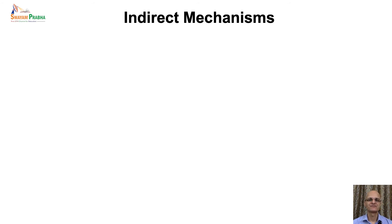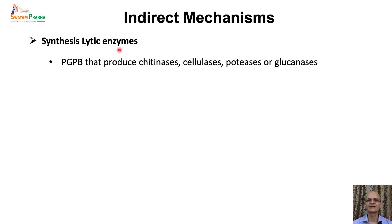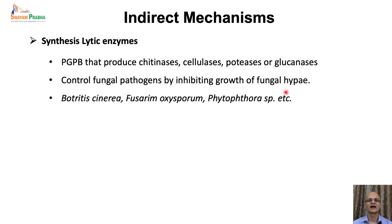The indirect mechanisms: there are several ways when PGPRs are not directly involved in stimulating plant growth but influence or alter other components of the system to result in stimulation of plant growth. The first is synthesis of lytic enzymes. PGPRs synthesize cell wall-degrading enzymes like chitinases, cellulases, proteases, or glucanases. These enzymes can directly control fungal pathogens by inhibiting their hyphal growth — they can lyse the cell wall of fungal pathogens and inhibit their growth.